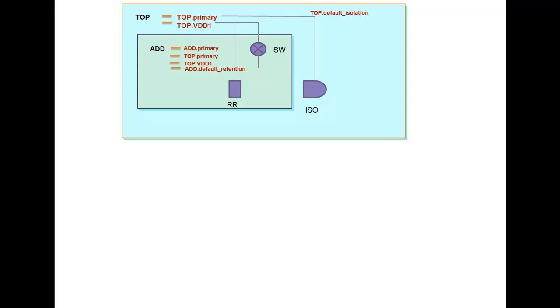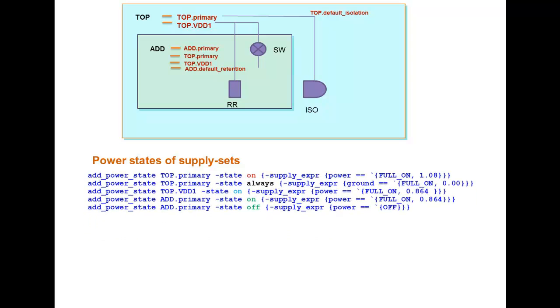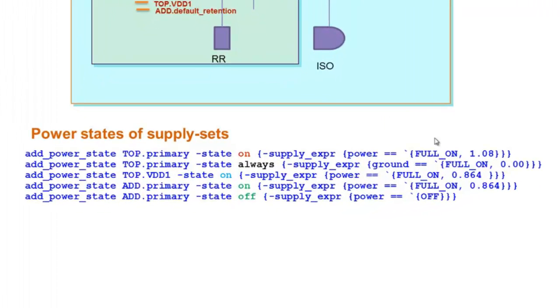Let's go ahead and define the Power State table. It has two sections. Firstly, we define the Power States of Supply Sets using the construct AddPowerState. Here we can see that the AddPowerState for Top.Primary has a state named On for function Power with the voltage 1.08 and Top.Primary Ground has a state named Always operating at 0.0.